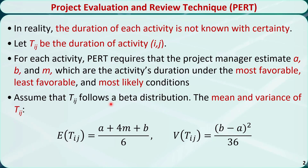PERT requires the assumption that tij follows a beta distribution. The mean or expected value of tij can be approximated by the duration under the best case scenario, plus 4 times the duration under the most likely scenario, plus the duration under the worst case scenario, divided by 6. This is a good estimate based on experience. The variance of tij can be approximated by the duration under the worst case scenario minus the duration under the best case scenario, squared, and then divided by 36.